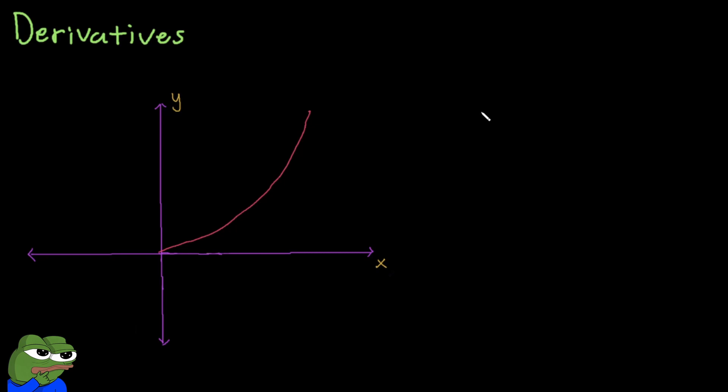In class, you might see this sort of notation for derivatives: dy over dx. This, in particular, is read as the differential of y with respect to x.